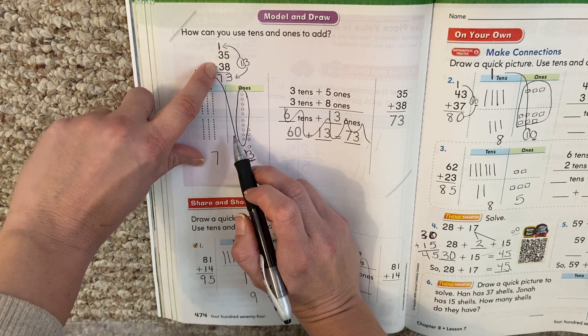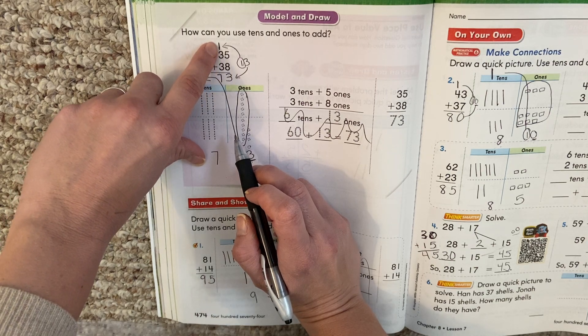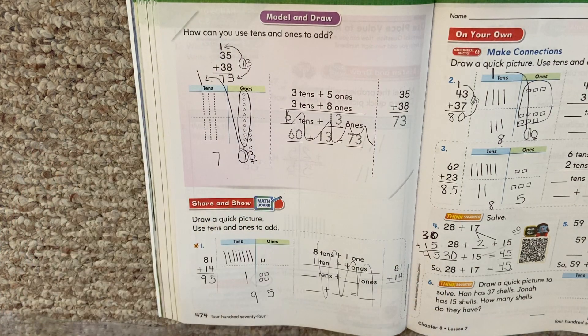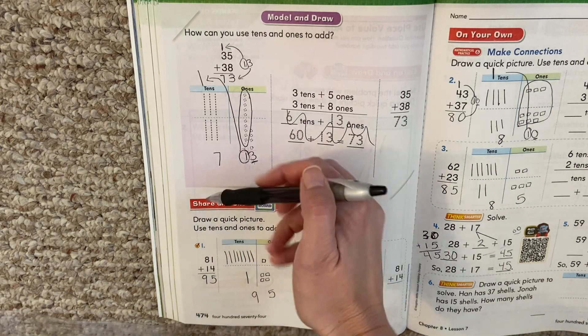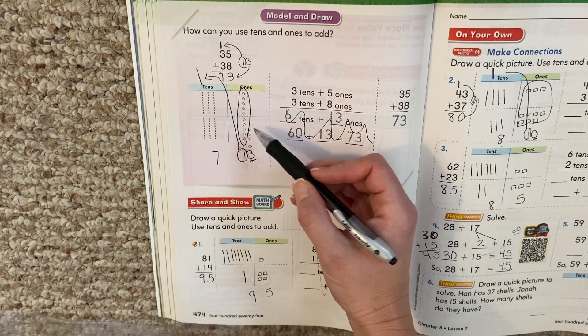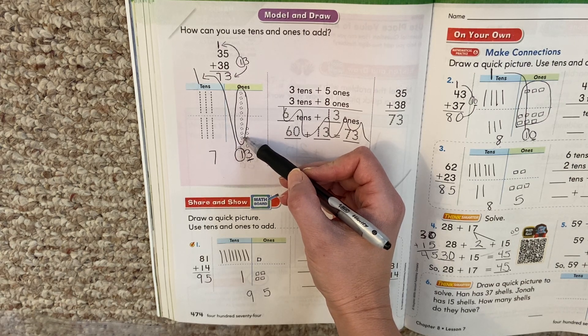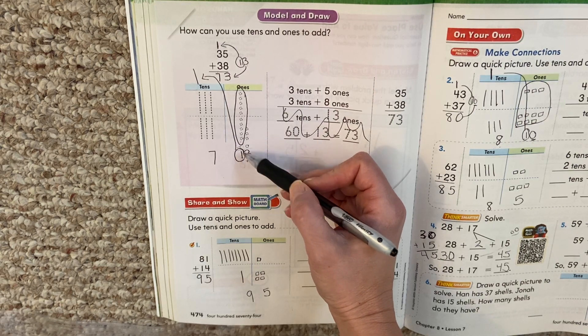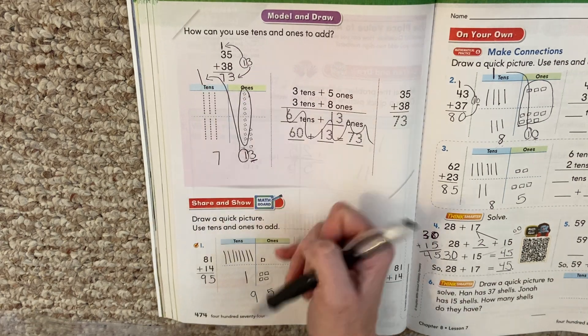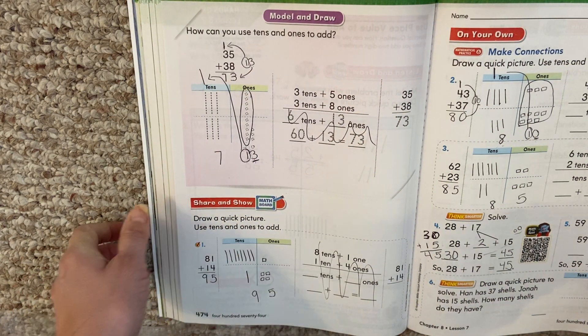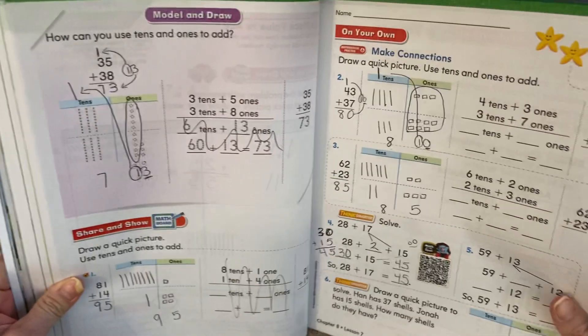Then we add all of it going down. 3 plus 3 is 6, plus 1 more is 7. So 73. So we looked at that, and we could even model it out where we circle all the 1s. Look, there was 10 ones. We circled them. That's our 10 that needs to be moved over here.